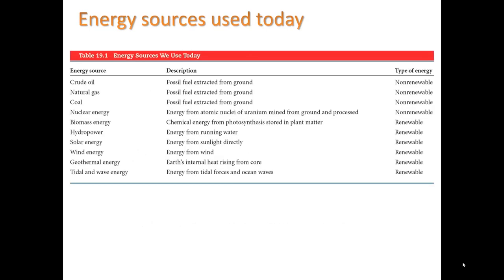Here are the energy sources used today. The first three are fossil fuels and then nuclear — these are all considered non-renewable. Nuclear energy runs from uranium. And then we have biomass, hydropower, solar, wind, geothermal, and tidal, which you'll take a look at in assignment 10.2.